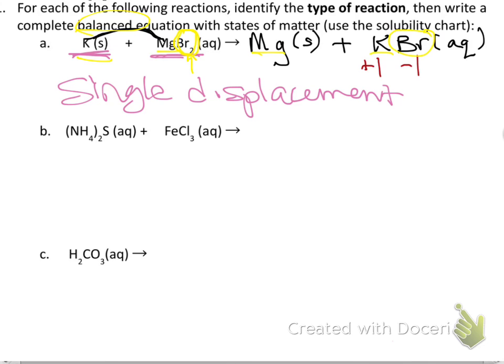The only thing I can change when balancing is the coefficient in front of a compound — I can't change subscripts. I can't write BR₂ because that would give a 2− charge with a 1+ charge, which doesn't make sense. So I put a 2 in front of KBr. That gives me two K's on the right, so I put a 2 in front of K on the left. Now the equation is balanced and I'm good to go.